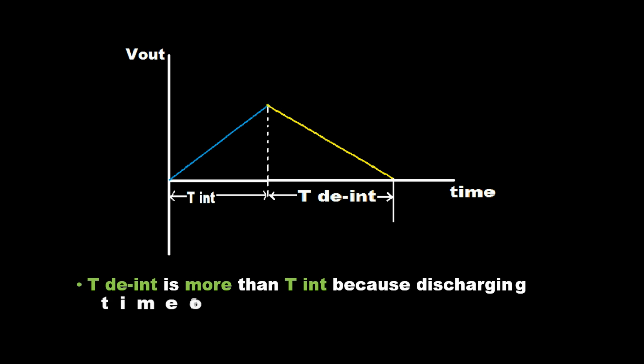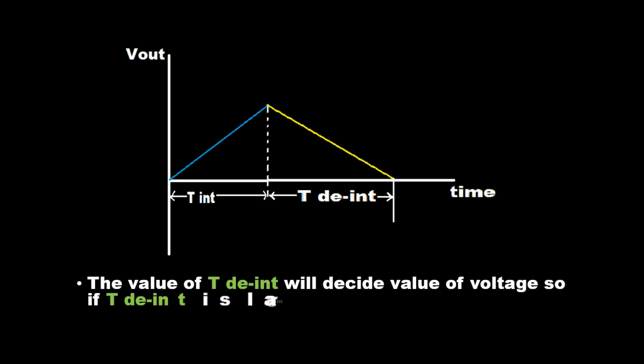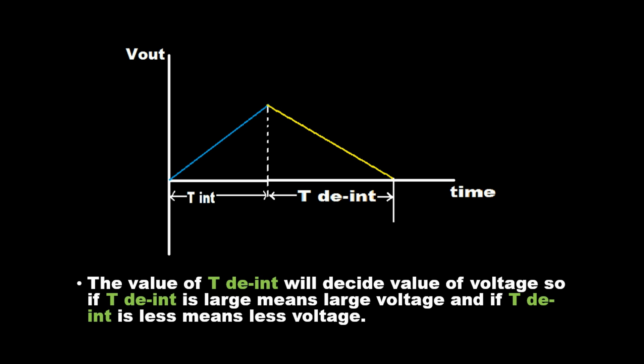TDEINT is more than TINT because the discharging time of the capacitor is more than its charging time. The value of TDEINT will decide the value of voltage, so if TDEINT is large it means large voltage, and if TDEINT is less it means less voltage.